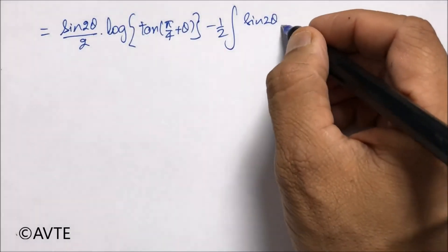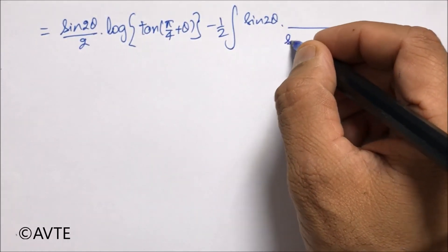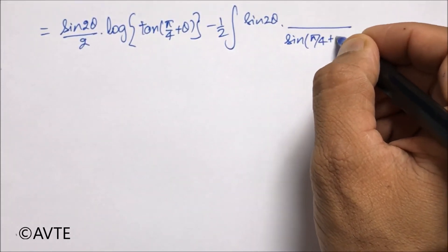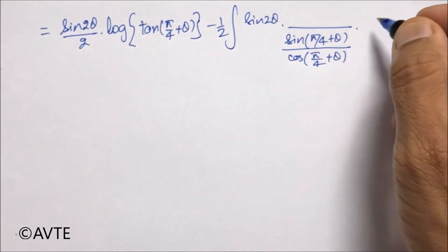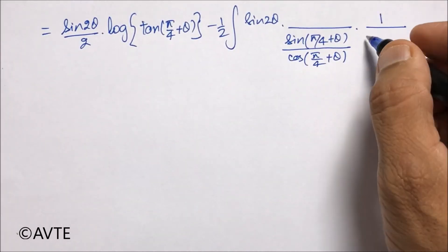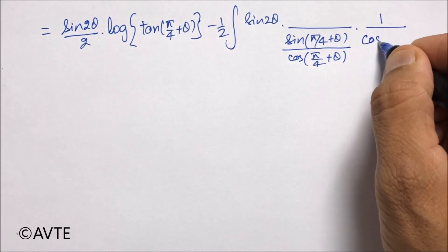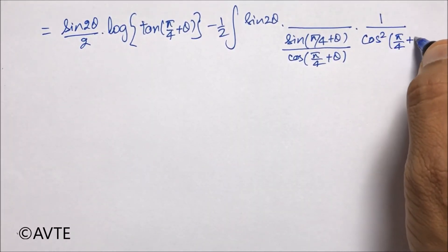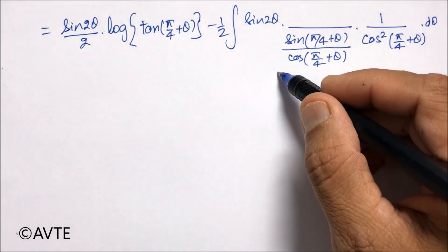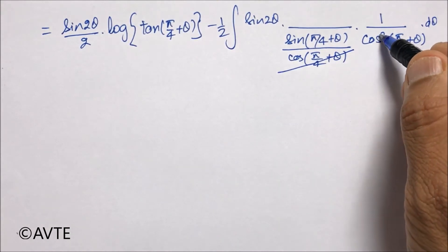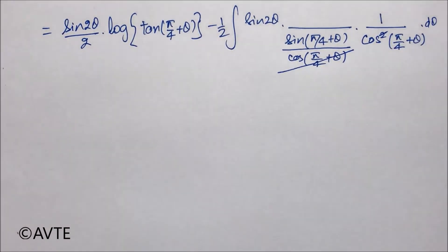And you break tan to sine by cos, and you write secant square as 1 upon cos square π/4 + θ. Now you can see that cos from the square they get cancelled.